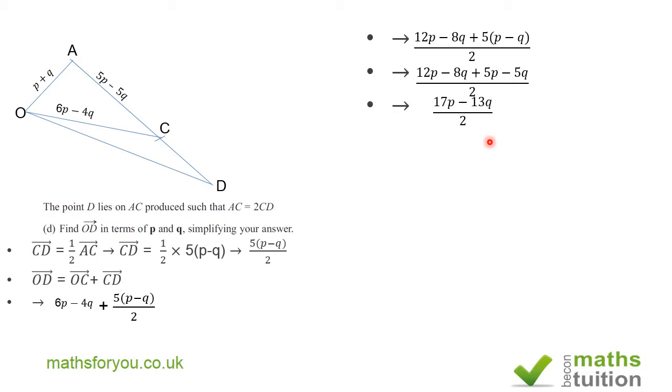When we collect like terms, OD is 17P, because 12P and 5P give me 17P there.